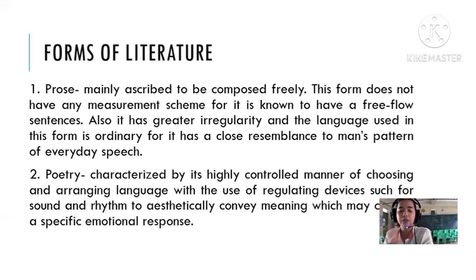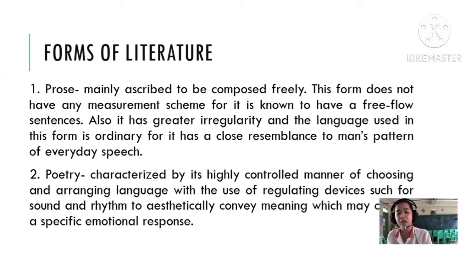In terms of forms of literature, we have two forms: prose or poetry. Prose is composed freely — it does not have any measurement, it has free-flowing sentences, great irregularity, and the language used is ordinary, closely resembling everyday speech. In short, prose is written in sentences. Examples include essays, short stories, and novels, written mainly in paragraph form.